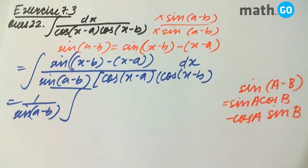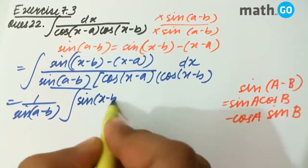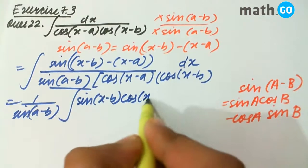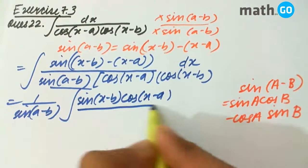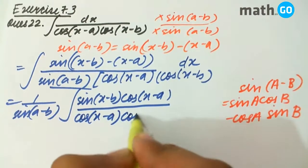So applying the formula, we are left with sin(x-b) into cos(x-a) upon the denominator, which is cos(x-a) into cos(x-b).